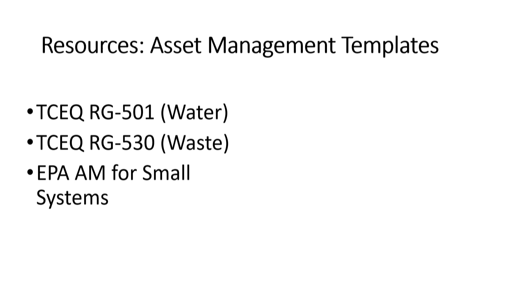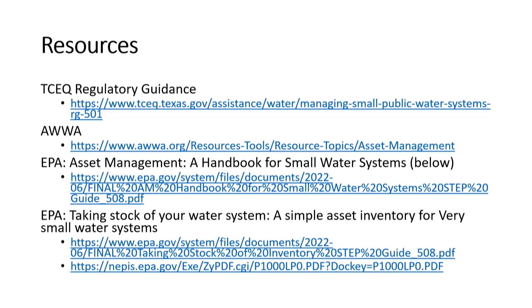As a wrap-up, the resources TCEQ has are the RG 501 for the water system and RG 530 for wastewater. Jason has copies downstairs, and you can find them online on TCEQ's website using the search box. EPA does have a few different versions with links. Look at other associations — a lot of groups have put this together because they know the importance of it. Please go visit with Jason Robinson on asset management; he does roadshows on this topic often. I appreciate the time and thank you for listening.